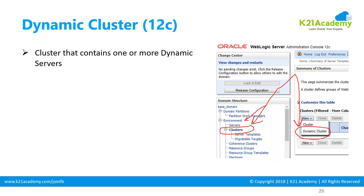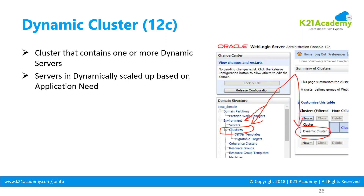In WebLogic 12C, there is a new concept called dynamic cluster. A dynamic cluster is a cluster that contains one or more dynamic servers. This feature is only available in 12C — it is not available in 11G. That brings up the question: what is a dynamic server? We'll cover that in a moment.